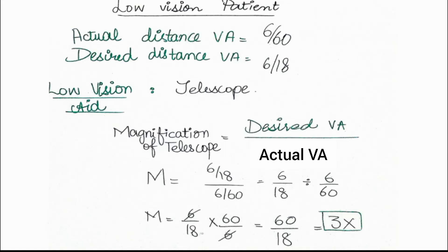You then ask the patient about their requirement. They tell you they want to see objects at a specific distance — for example, they want to read the 6/18 line at a 6-metre distance. So the desired distance real acuity is 6/18, meaning at 6 metres the patient wants to read the 6/18 letter. Since the patient wants to see a distant object, a telescope may be a good choice.